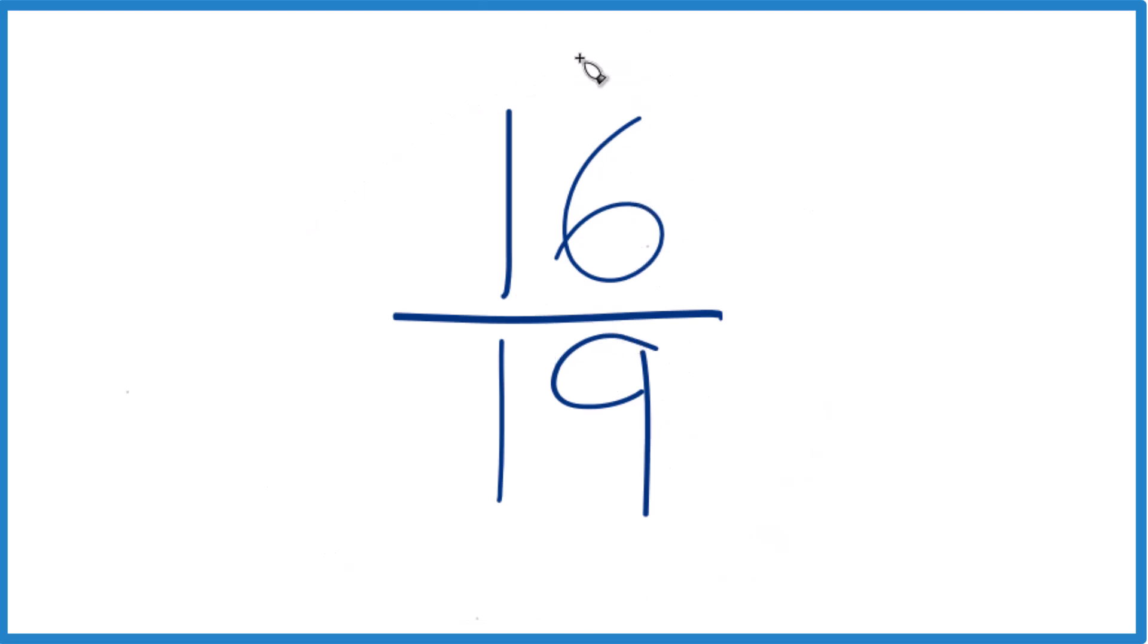What we want to do is find a common factor, something that goes into both 16 and 19 evenly. We're looking for a whole number, and what we really want is the greatest common factor.